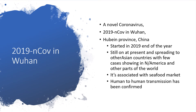There is a specific type of coronavirus causing problems right now: the 2019 novel coronavirus currently ravaging Wuhan, Hubei province in China. It started at the end of 2019 and is still ongoing, spreading to other Asian countries, with a few cases appearing in North America and other parts of the world. It is associated with the seafood market. Human-to-human transmission has been confirmed, though not very common.